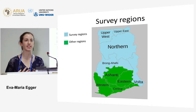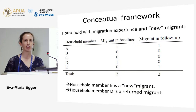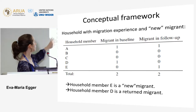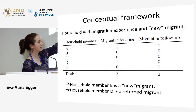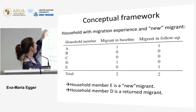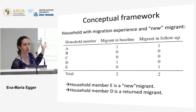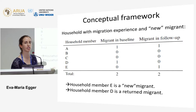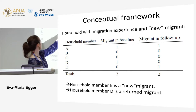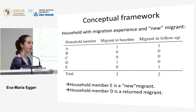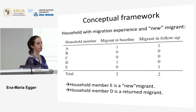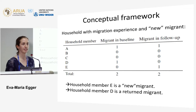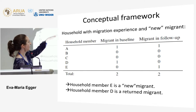To give a better insight into what we mean by a new migrant and migration experience within households, consider an example household with five members A, B, C, D, and E. At the baseline in 2013, members A and D were away as migrants. The interview was conducted with the household head, who stated that persons A and D are currently away as migrants, while the other three members were present. In the follow-up survey, we observed that household member A is still away as a current migrant.